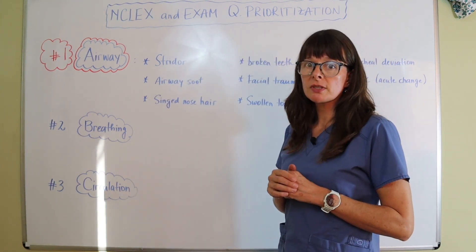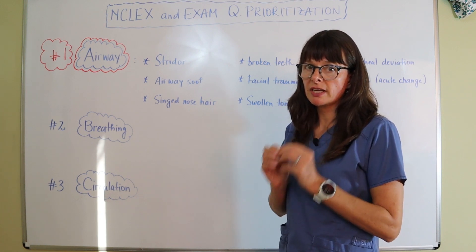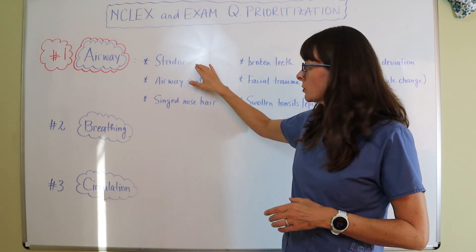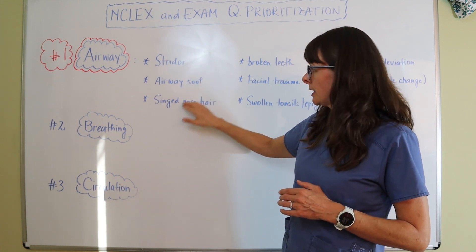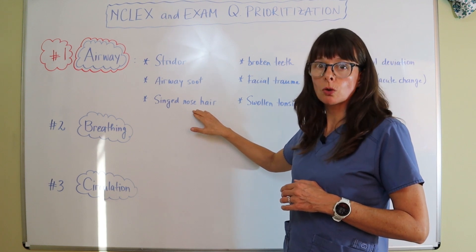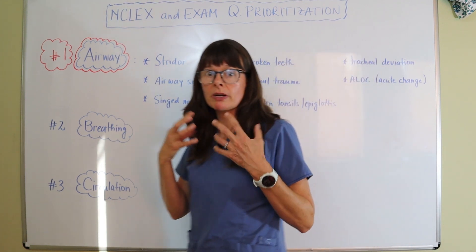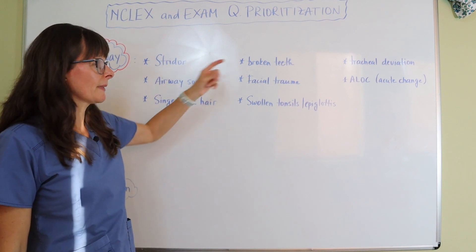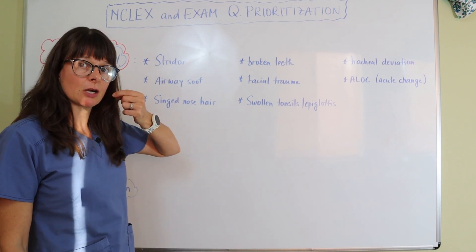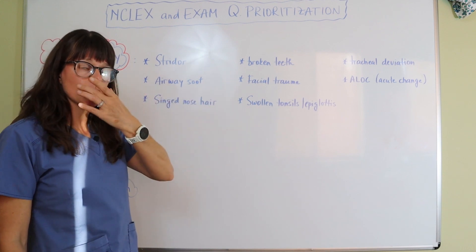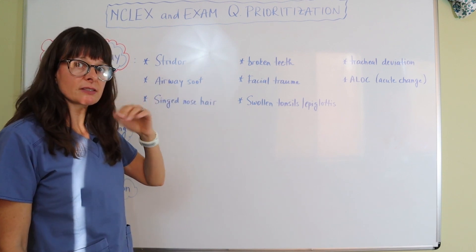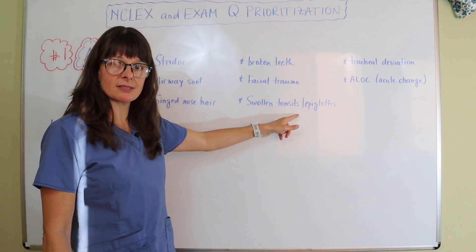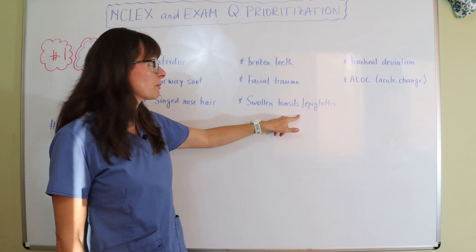Things that hint at an airway problem include: stridor or constriction of the throat, airway soot from a burn, singed nose hair from a burn — since we always worry about post-burn swelling — broken or dislodged teeth in the patient's throat, facial trauma, facial fractures, loose objects in the airway, and swollen tonsils or epiglottis, such as epiglottitis in the pediatric population.